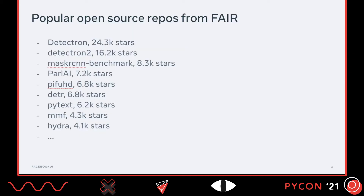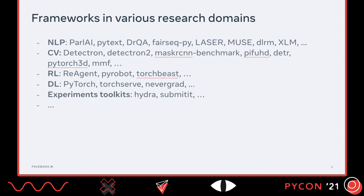Just to give an idea, I've tried to pull the popular open-source repos from FAIR on GitHub, simply ranked by the number of stars. This is by no means an exhaustive list, but just to give you an idea. You may have been familiar with some of them or actually all of these frameworks. When we look at these frameworks, they cover various research domains such as natural language processing, computer vision, reinforcement learning, deep learning, and some toolkits for people to run experiments.